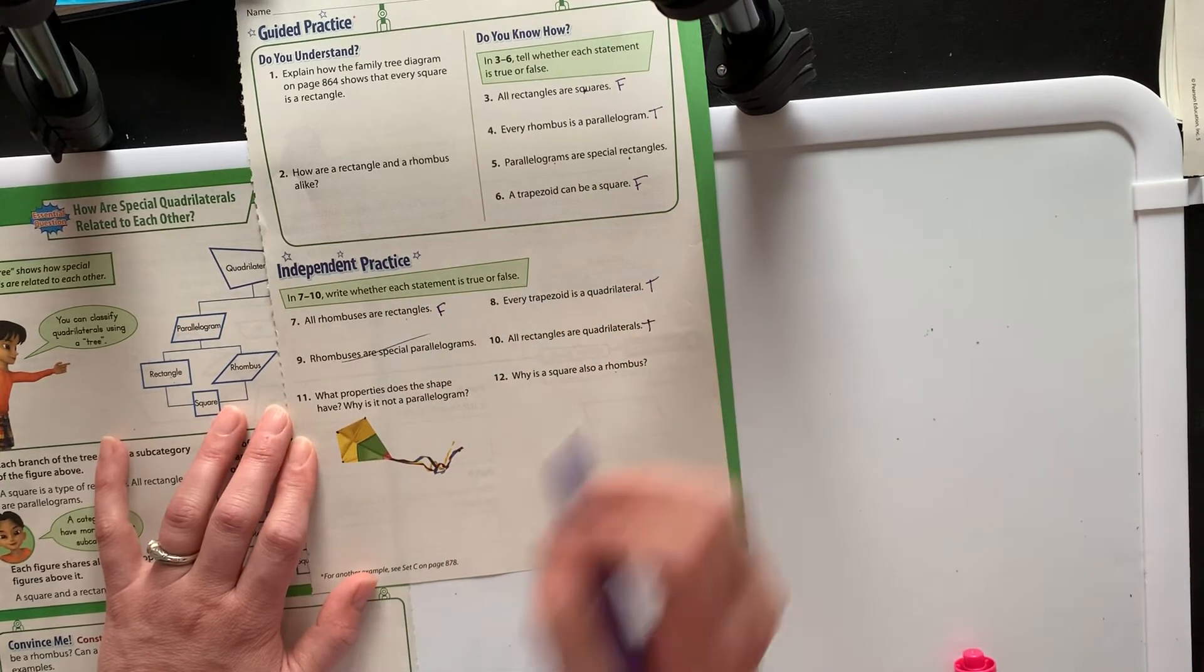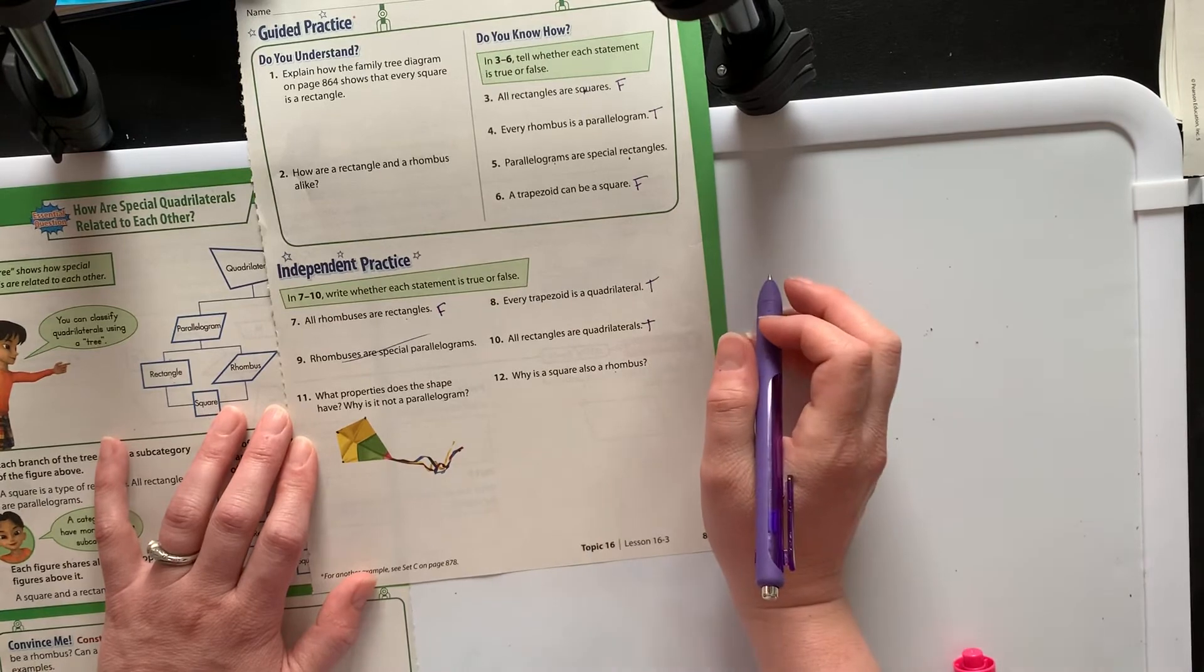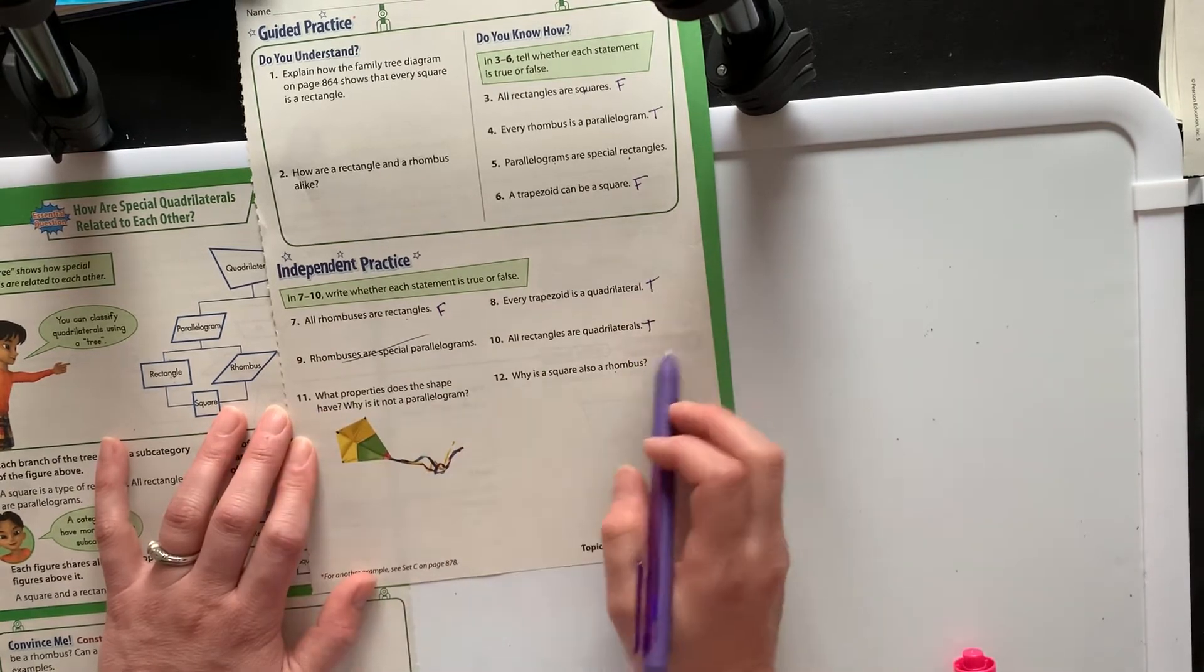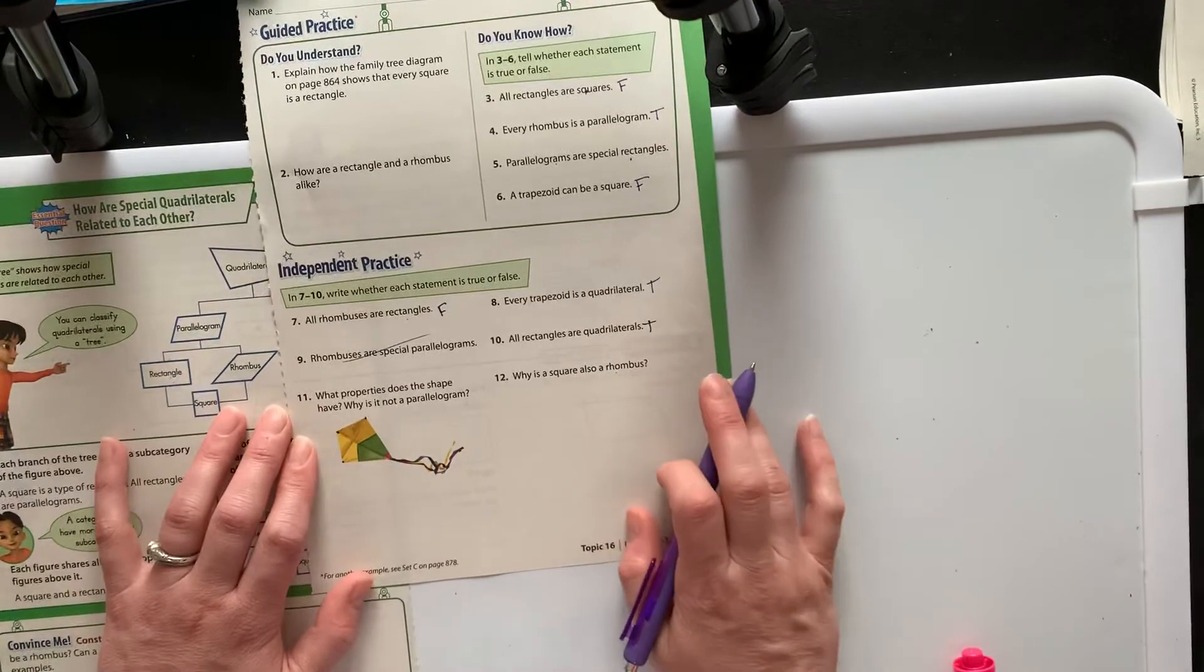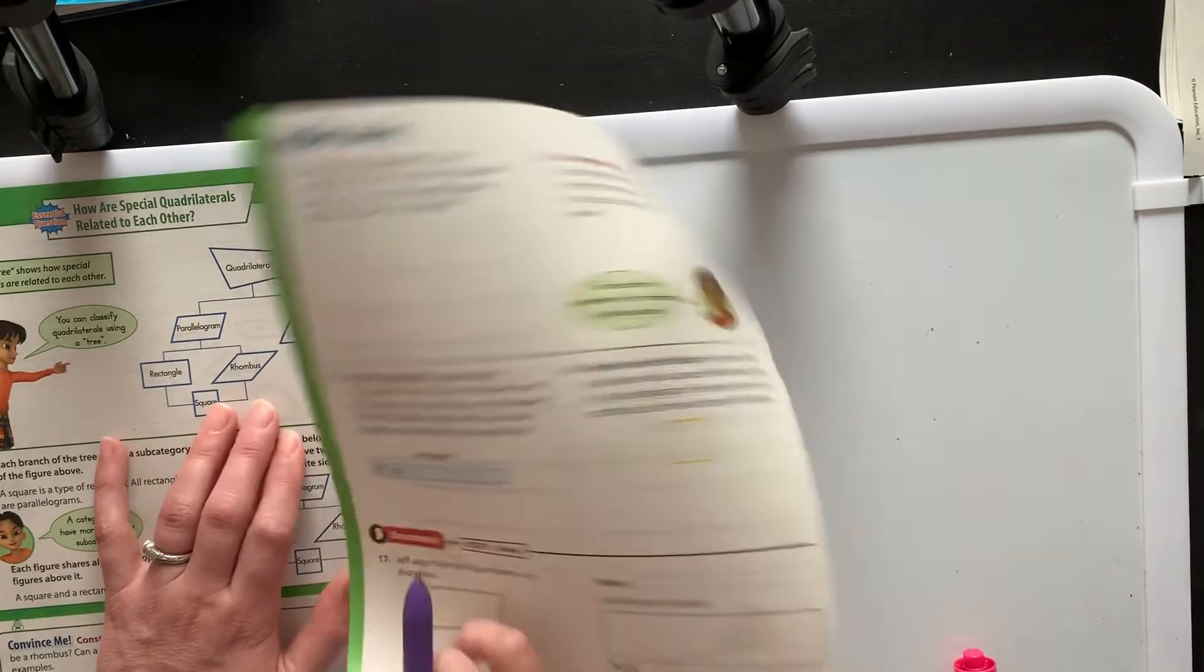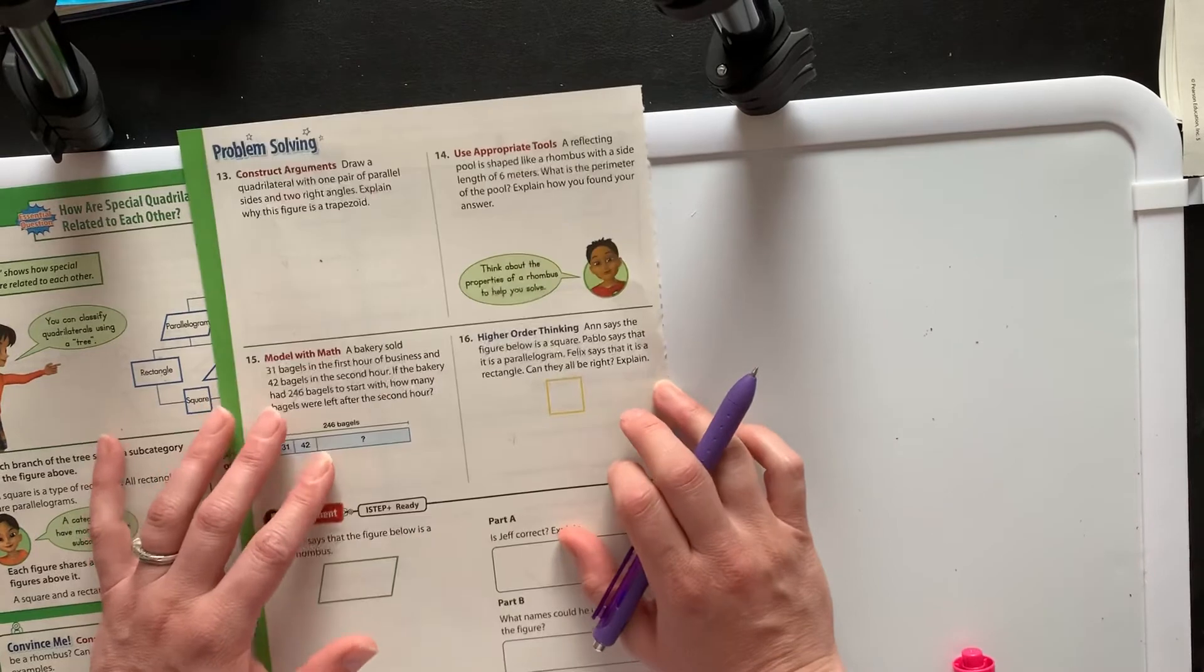And why is a square also a rhombus? Well, that's because they both have four sides of the same length. So that is some extra practice. We can try one more on the back. Let's go.